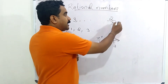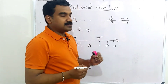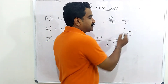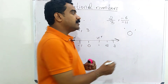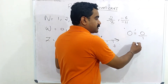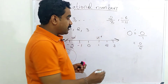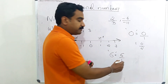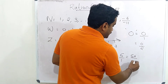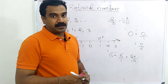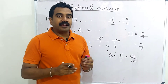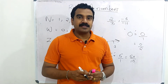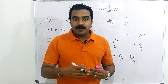Negative 6 by negative 11 — both are negative integers but it is in P by Q form, so it is a rational number. Is 0 a rational number? Yes, because you can write 0 as 0 by 1, 0 by 2, etc. Is 6 a rational number? Yes, because 6 can be written as 6 by 1 or 60 by 10. So any number which we can write in the form P by Q, where P and Q are integers and Q is not equal to 0, is a rational number.